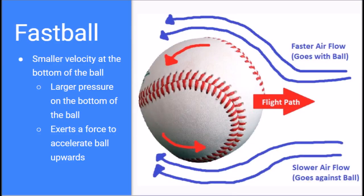When thrown, a fastball rotates in such a way that the top of the ball moves in the same direction as the air flowing past it, while the bottom of the ball moves in the opposite direction as the air flowing past it. This causes the velocity of the air to be greater on the top and smaller on the bottom of the ball.